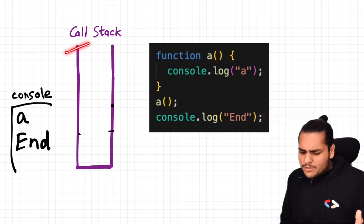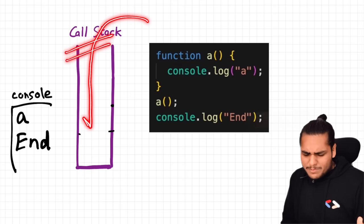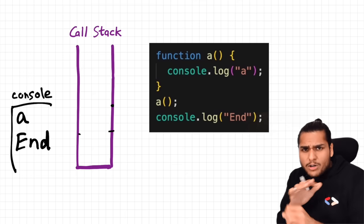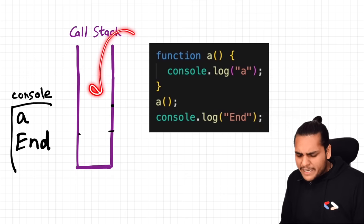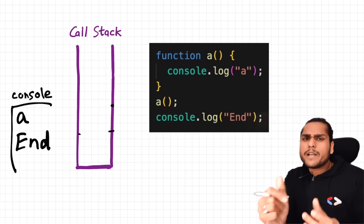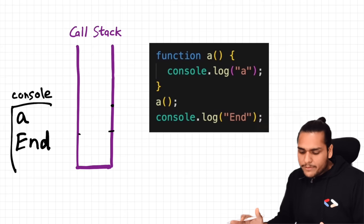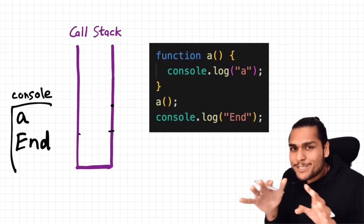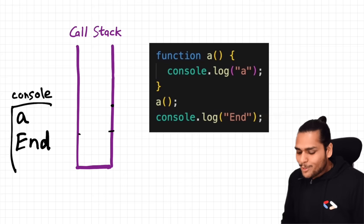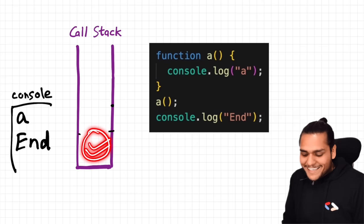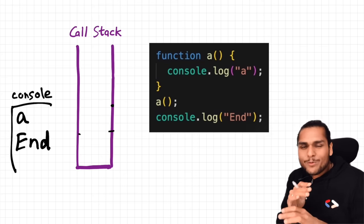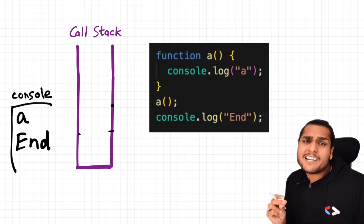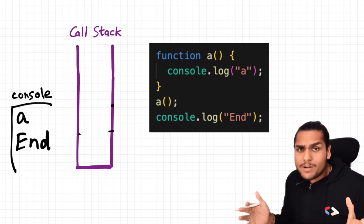The main job of this call stack is to execute whatever comes inside it — that's all it does. It does not wait for anything. If you give it anything, it just quickly executes it. That is why I say that time in JavaScript waits for none, because all JavaScript code is executed here and this call stack won't wait for anything.